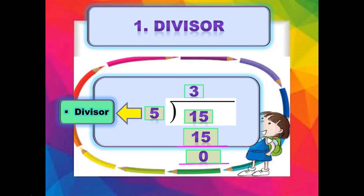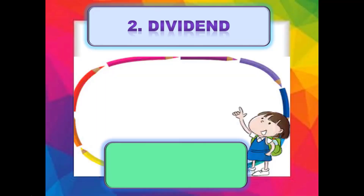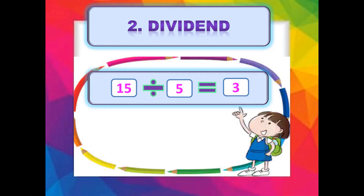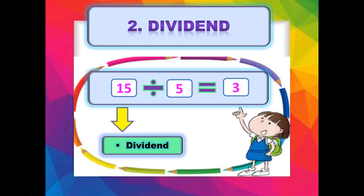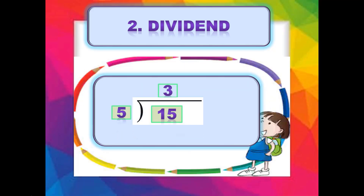Moving towards the second term — that is dividend۔ The number to be divided is called dividend۔ وہ number جس کو آپ نے divide کرنا ہے وہ dividend کہلاتا ہے۔ Example: 15 divided by 5 equals 3 — یہاں 15 اور 5 میں سے کون سا number بڑا ہے جس کو ہم نے divide کرنا ہے؟ That is 15۔ تو 15 ہمارا dividend ہوگا۔